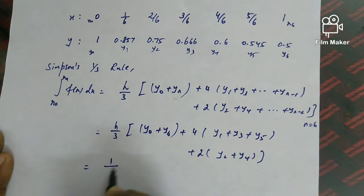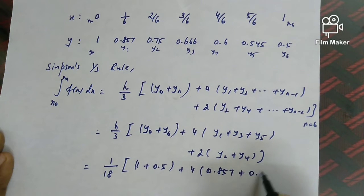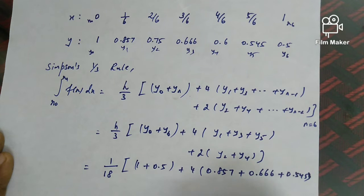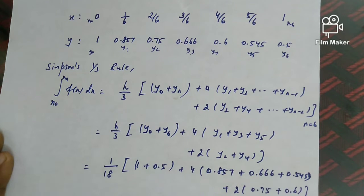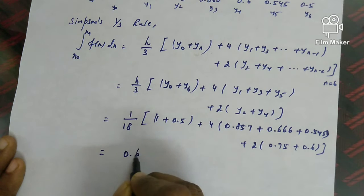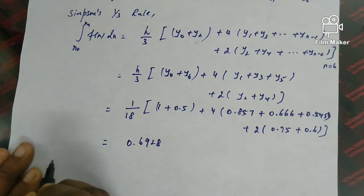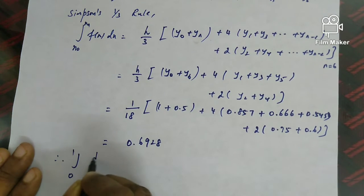Substituting all values: h = 1/6, so h/3 = 1/18. The expression becomes: 1/18 × [y₀(1) + y₆(0.5) + 4×(y₁=0.857 + y₃=0.666 + y₅=0.545) + 2×(y₂=0.75 + y₄=0.6)]. After calculating, the answer is 0.6928. So ∫₀¹ dx/(1+x) ≈ 0.6928.